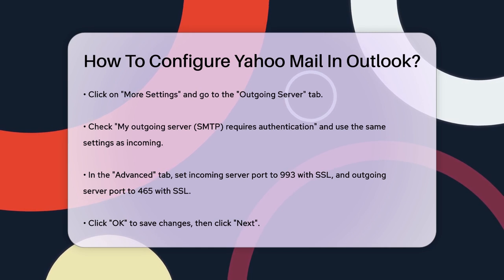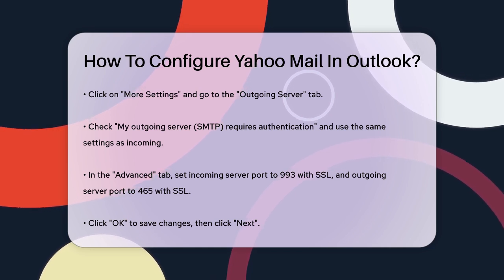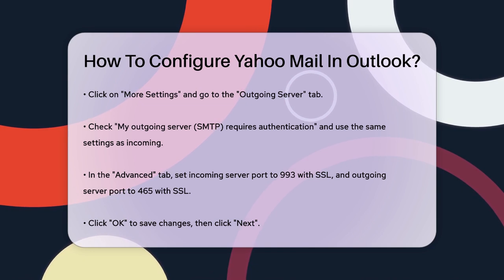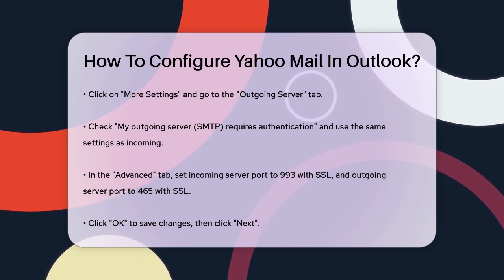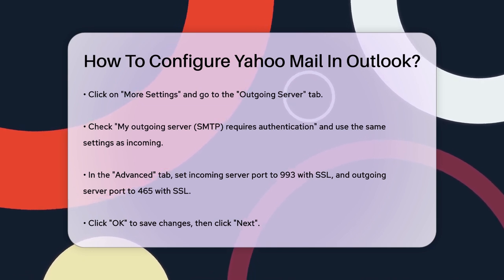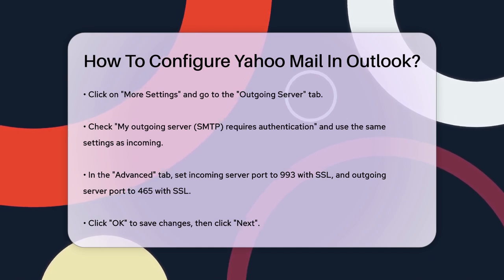To generate an app password, go to Yahoo's website, click on the menu Gear button, go to Account Info, then Account Security, and select Generate App Password. Choose Outlook Desktop and generate the password. Then go back to Outlook and paste this app password.